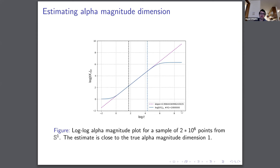Similarly, we provide the alpha magnitude of a circle, which allows us to compute the alpha magnitude dimension. We get an estimate of 0.996, very close to one — a strong estimate for the alpha magnitude dimension of a circle.